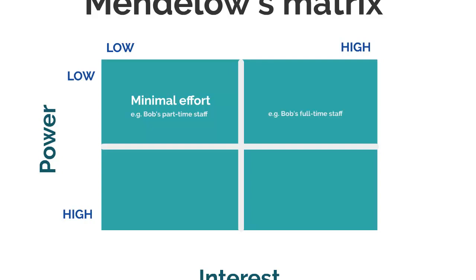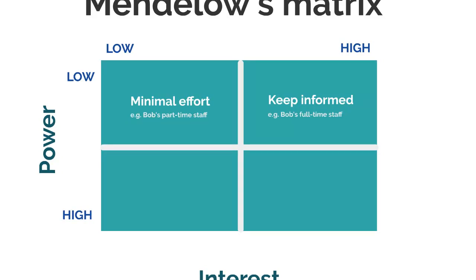Next, you have the kind of stakeholder that has low power but high interest — those might be something like Bob's full-time staff. They're very interested in how the business is going, but they don't have that much power as employees. So you want to keep them informed. This regular communication is going to help retain good relationships with these stakeholders and it avoids them seeking to increase their power — for example, if it's employees, they might seek to increase their power through unionisation. Keeping them informed might make them realise they don't really have the problem they thought they had.